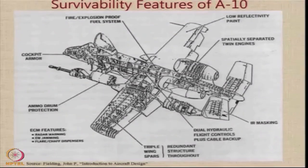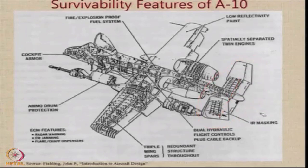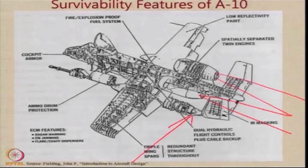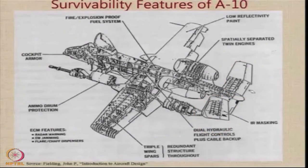The A-10 uses a twin vertical tail or H-tail configuration, where the two vertical tails are offset with a horizontal tail in between. One key purpose of this configuration is to shield the engine exhausts. The engines produce hot exhaust which becomes a source for heat-seeking missiles to home in on. The two vertical tails shield the engine exhausts from enemy heat-seeking missiles approaching from directions other than directly behind.